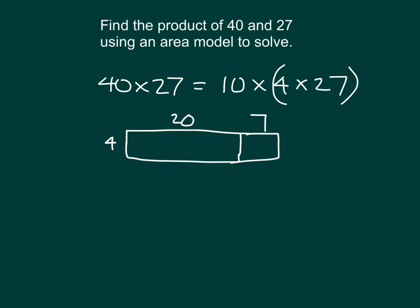So if we were to figure that out, 20 times 4 does equal 80, and 7 times 4 does equal 28, so 80 plus 28 equals 108.